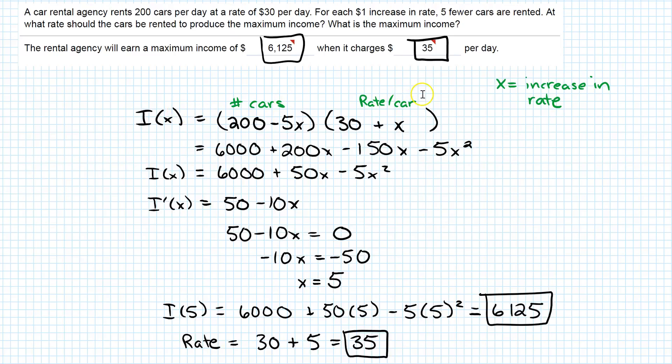We found our function by taking the number of cars times the rate per car. We took the derivative, set the derivative equal to 0, found out it equaled 5. To find the maximum income, we plugged that 5 into our income function. To find the rate they're supposed to charge, we took 5 and plugged it into the rate part of our original function.